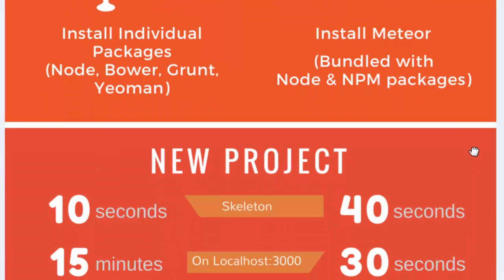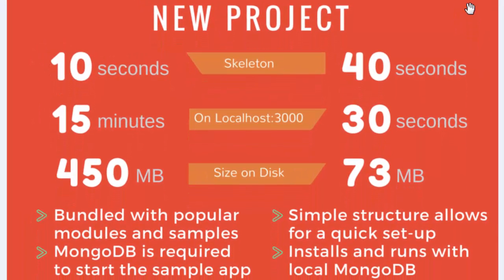How do we create new projects and how long do they take? In Mean.js you can clone the Git package in around 10 seconds — that's just your skeleton. The npm install takes about 15 minutes, and there are quite a lot of packages. In the last project I grabbed using Mean.js 0.4.0, it actually came to a disk size of 450 megabytes. The cool thing though is that they're bundled.